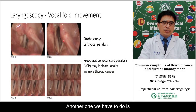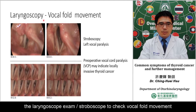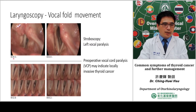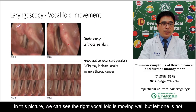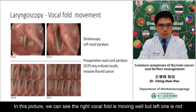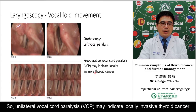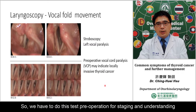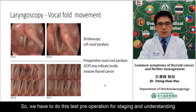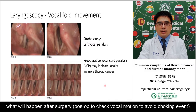Another step is to perform laryngoscopy and stroboscopy to assess vocal fold movement. In this picture, we can see left vocal fold paralysis — the right one moves well but the left does not. Unilateral vocal fold paralysis may indicate locally invasive cancer. So we should perform laryngoscopy before treatment to determine staging and to understand what may happen after surgery.